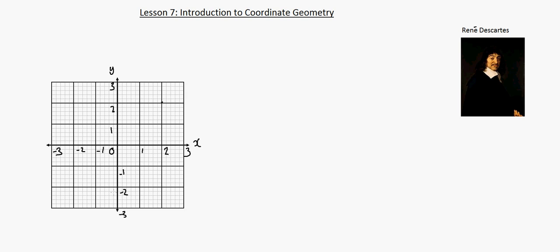It doesn't matter really which side you put the numbers on - you can put the numbers on this side or this side. It's only because I'm going to use this space to write examples. So let's determine a point. Let's call this point A, in red. So first we have the point letter - at this point we've given it letter A. Then we'll open a bracket and we'll have an x-coordinate and then a y-coordinate, and then we close the bracket.